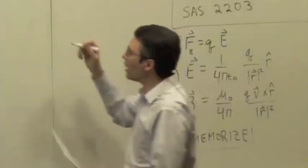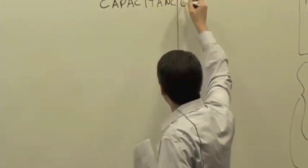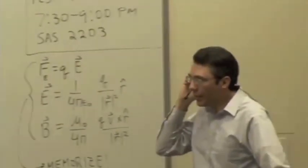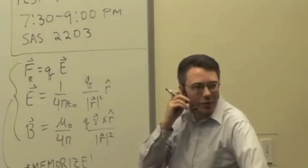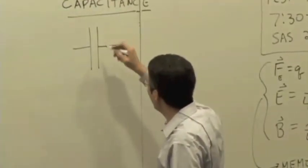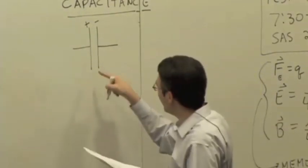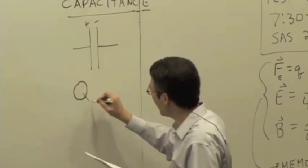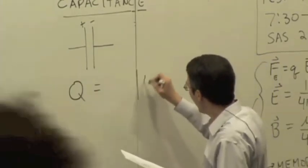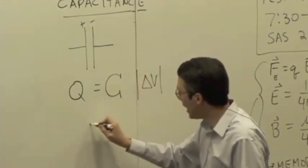Before we get to resistance and conductivity, I want to talk about something called capacitance. We looked last time at charging and discharging a capacitor. It turns out that the amount of charge that can be stored on a plate of a capacitor — in a parallel plate situation where one side gets charged positive and the other negative — the magnitude of the charge, called Q, is proportional to the potential difference across the plates, delta V. The constant of proportionality is called capital C, and capital C is the capacitance.